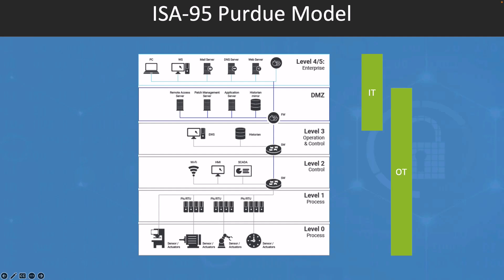Let's start bottom-up. Level 0, or the process level, is the lowest level of the Purdue model, and represents the physical processes and equipment that are being controlled and monitored by the industrial control system. This includes sensors, actuators, and other devices that are used to measure and control the physical processes.